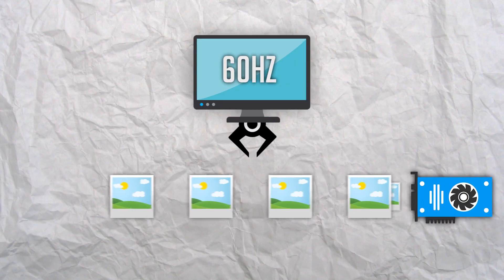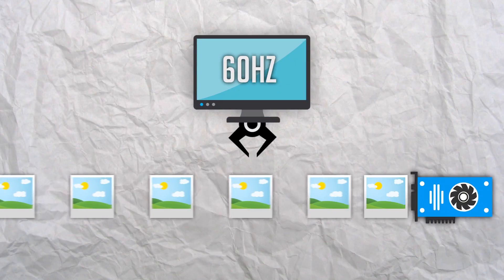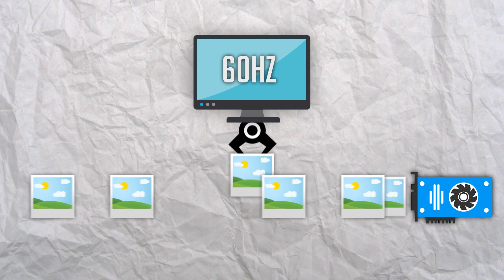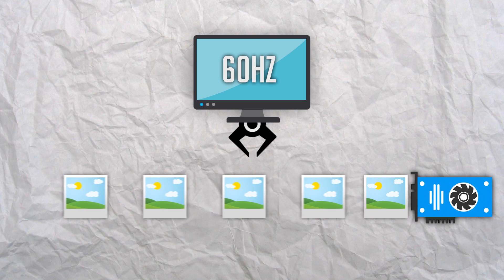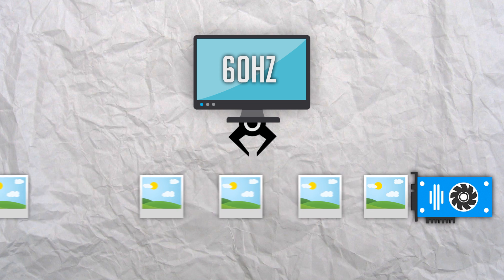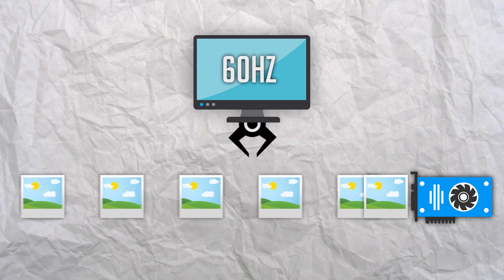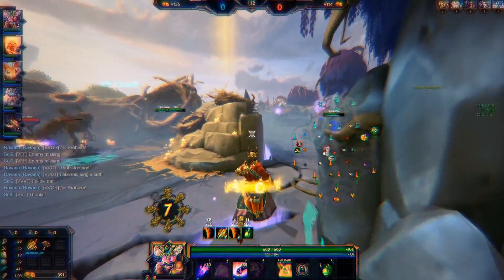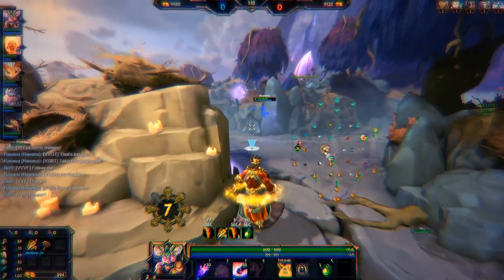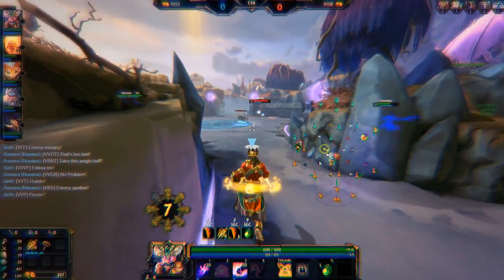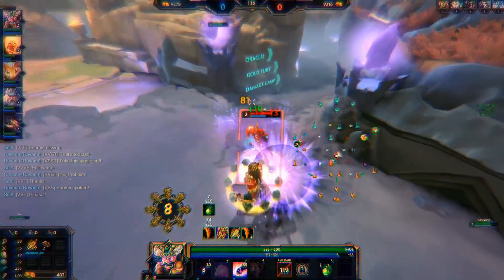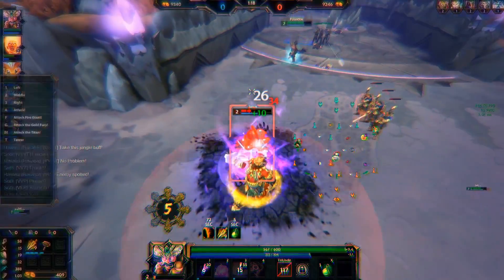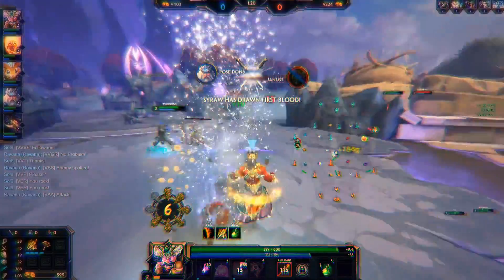This means that every time your monitor goes to grab a frame, it has a lot more frames coming in, and all of them are more up to date by fractions of a second — and these are what reduce your input delay. Because your monitor could grab that frame that's been sitting there for a while, or it could grab this new one that just came in.